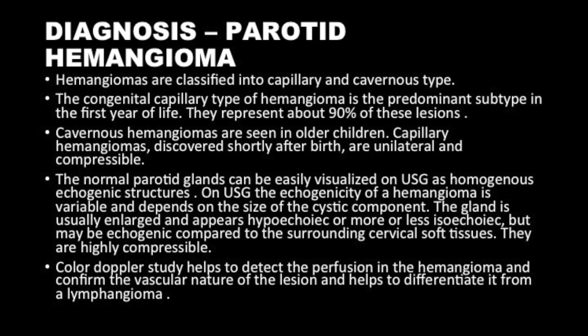Hemangiomas can be of two types: capillary or cavernous. Cavernous hemangiomas are seen more commonly in older children. Ultrasound and Doppler can evaluate vascular lesions very well, and you can make a confident diagnosis of a hemangioma or venous malformation on ultrasound. Depending upon the pattern of flow, they could be low-flow or high-flow types.